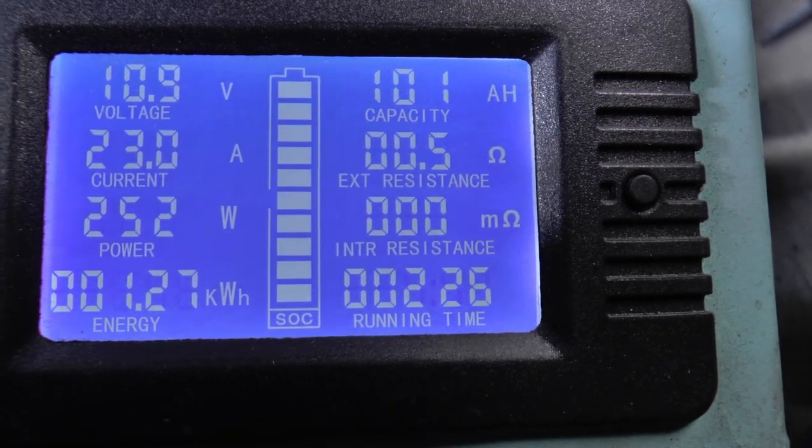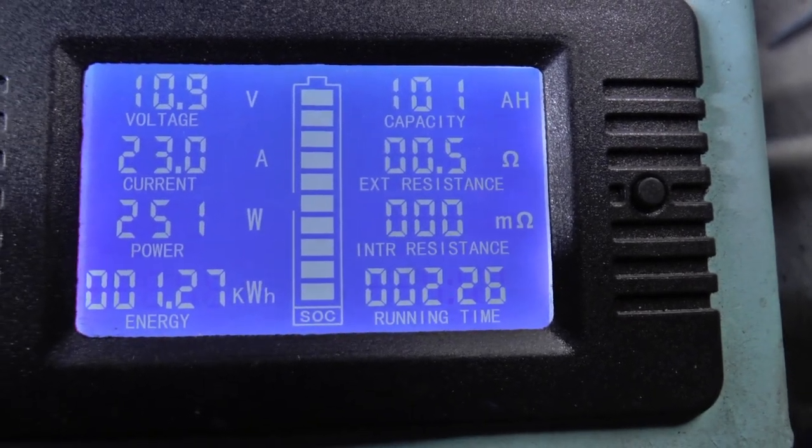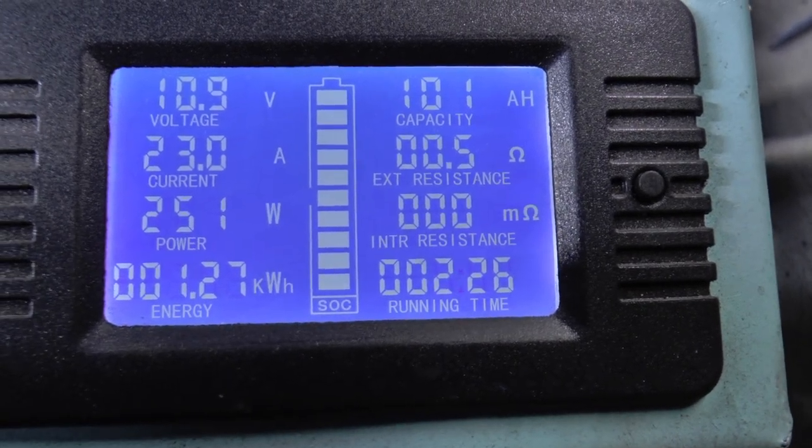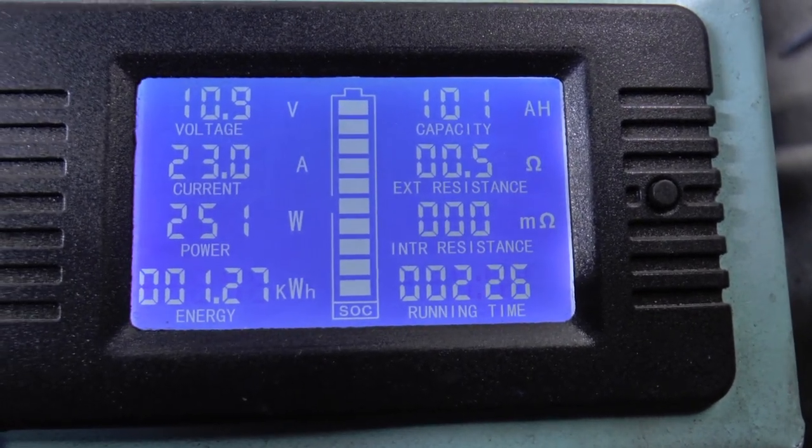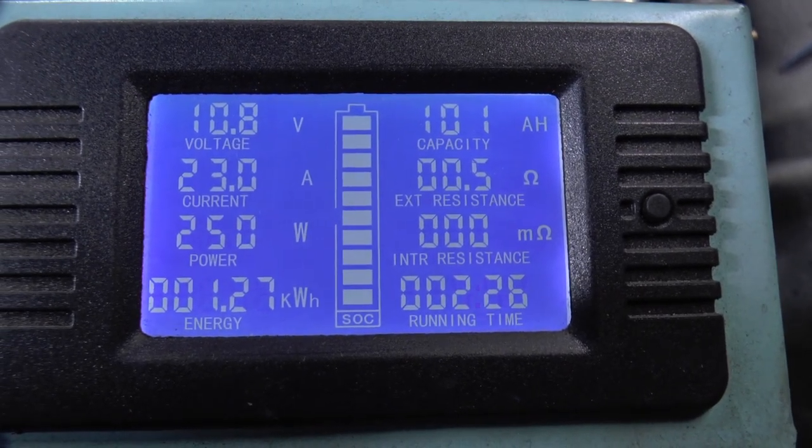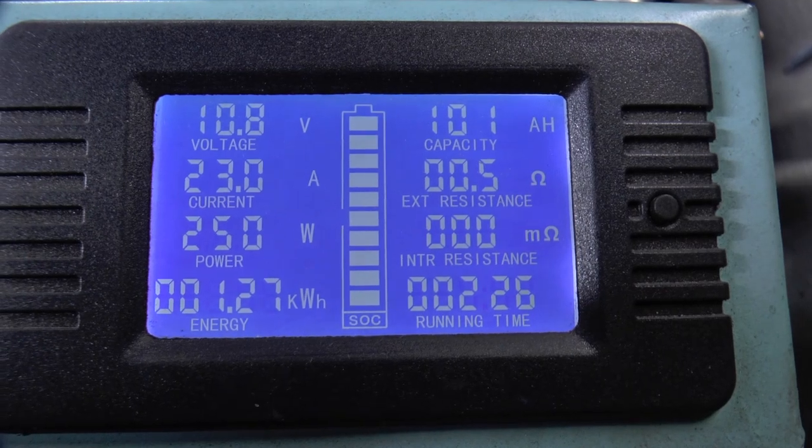Okay, we're up to 101 amp hours, down to 10.9 volts. Now these two batteries are consecutive serial numbers. They were both bought at the same time and they've been used in series in a 24 volt system here in my garage for a year.